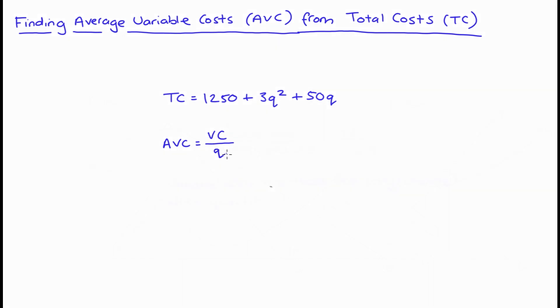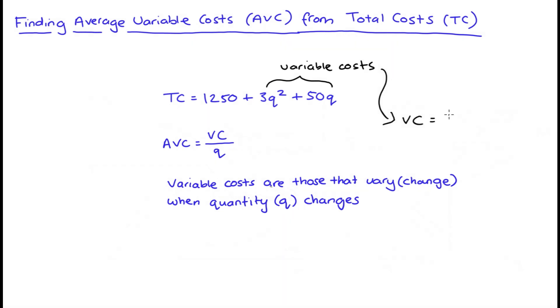Now our variable costs will be equal to that part of total costs that varies or changes when our quantity changes. And so this means that we're looking for any part of our total cost function that has a Q variable attached to it. In our example, that's going to be equal to this section here, 3Q squared plus 50Q. So variable costs is equal to 3Q squared plus 50Q.